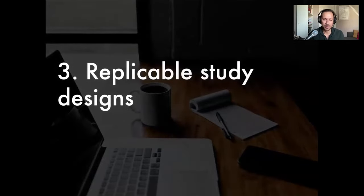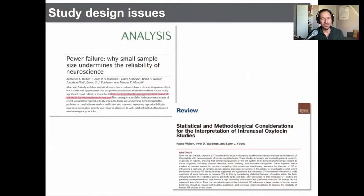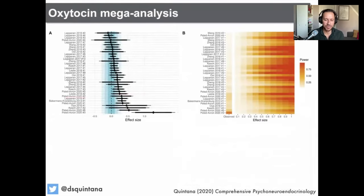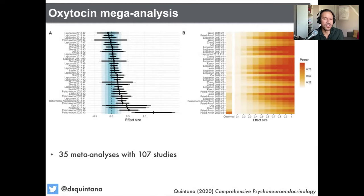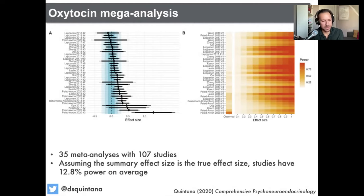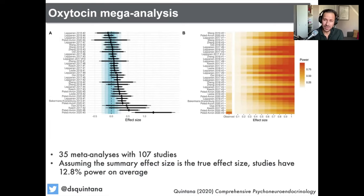Number three: replicable study designs. All across the biomedical sciences, there have been issues with study design. One thing we often forget is that studies not designed to detect a wide range of effect sizes also cannot reject a wide range of effect sizes. I did a study that collated 35 meta-analyses including 107 unique studies. The first thing I did was calculate the statistical power for all studies included in these meta-analyses — shown in panel B, which I call a firepower plot. I posted the code, people started using it, and based on that feedback I developed an R package.